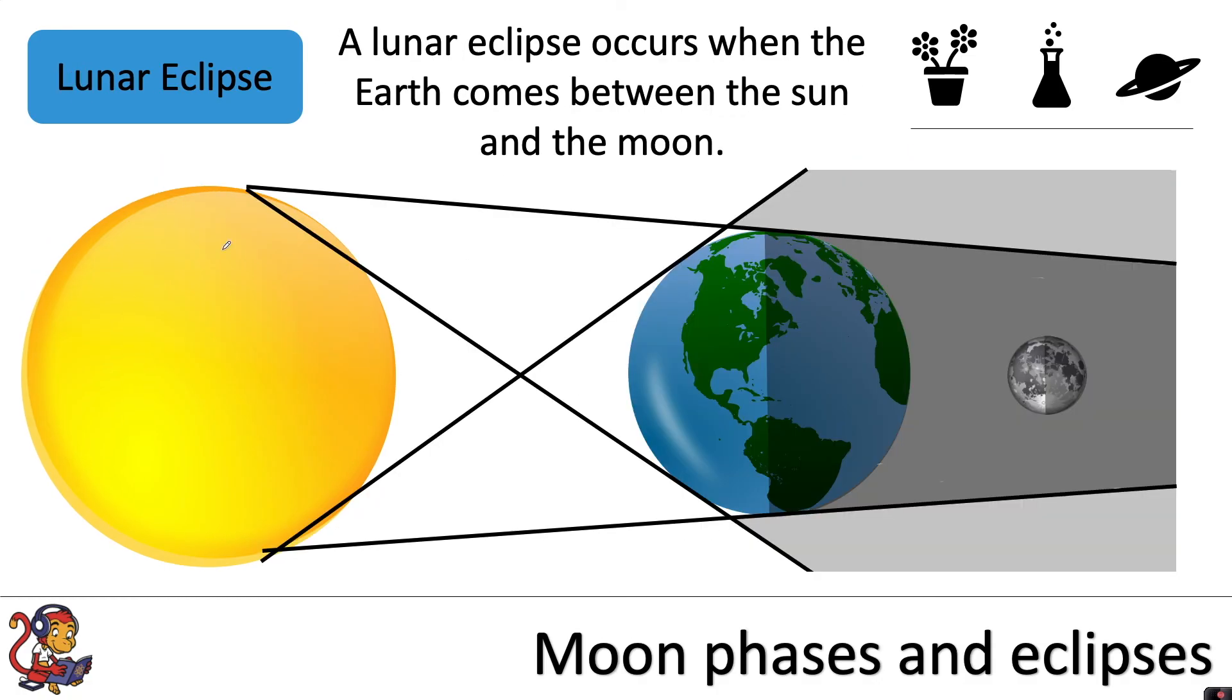There is another type of eclipse called a lunar eclipse and a lunar eclipse occurs when the Earth comes between the Sun and the Moon.